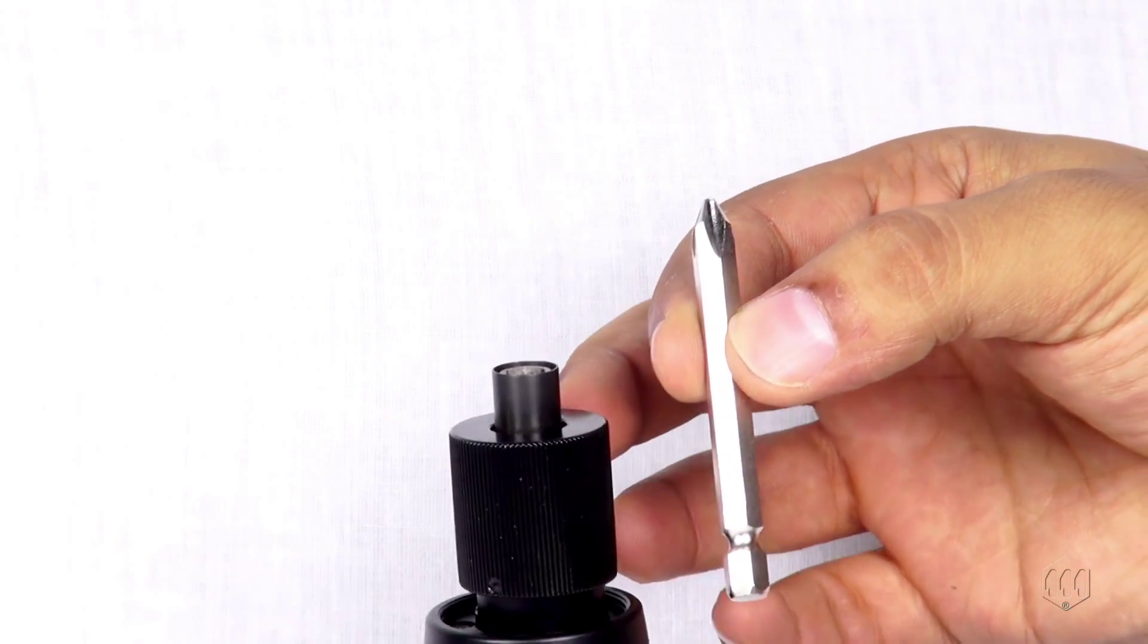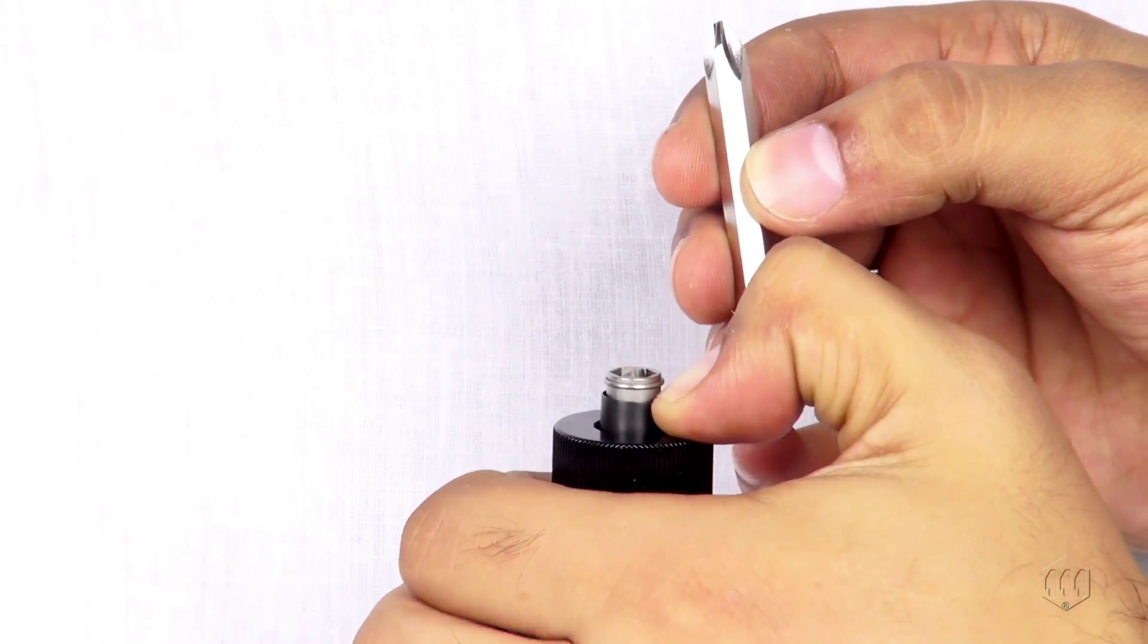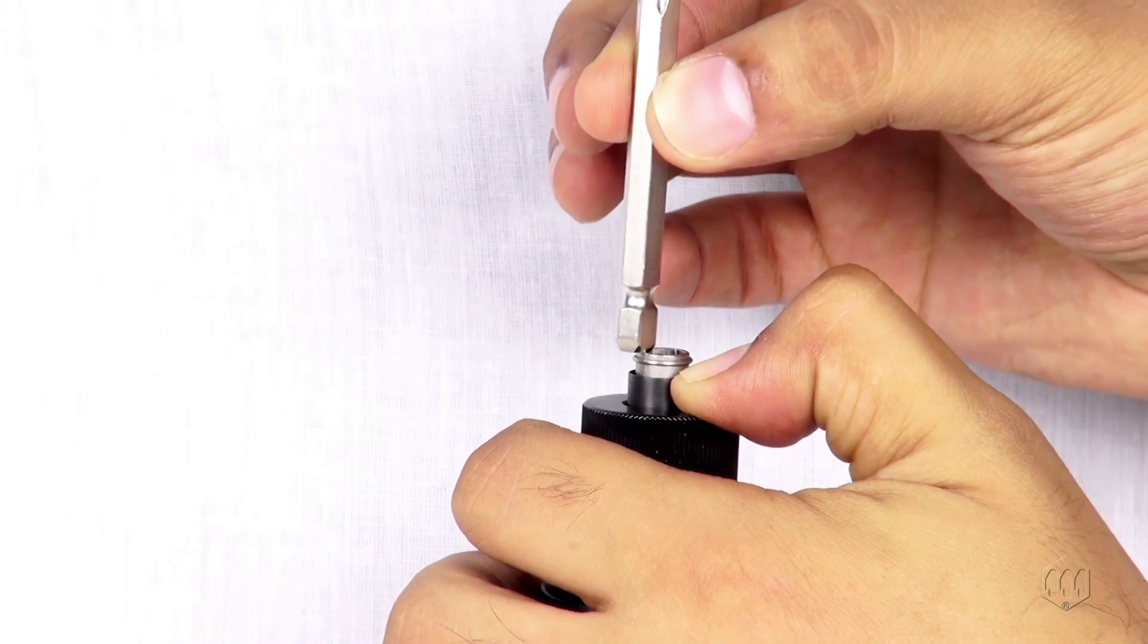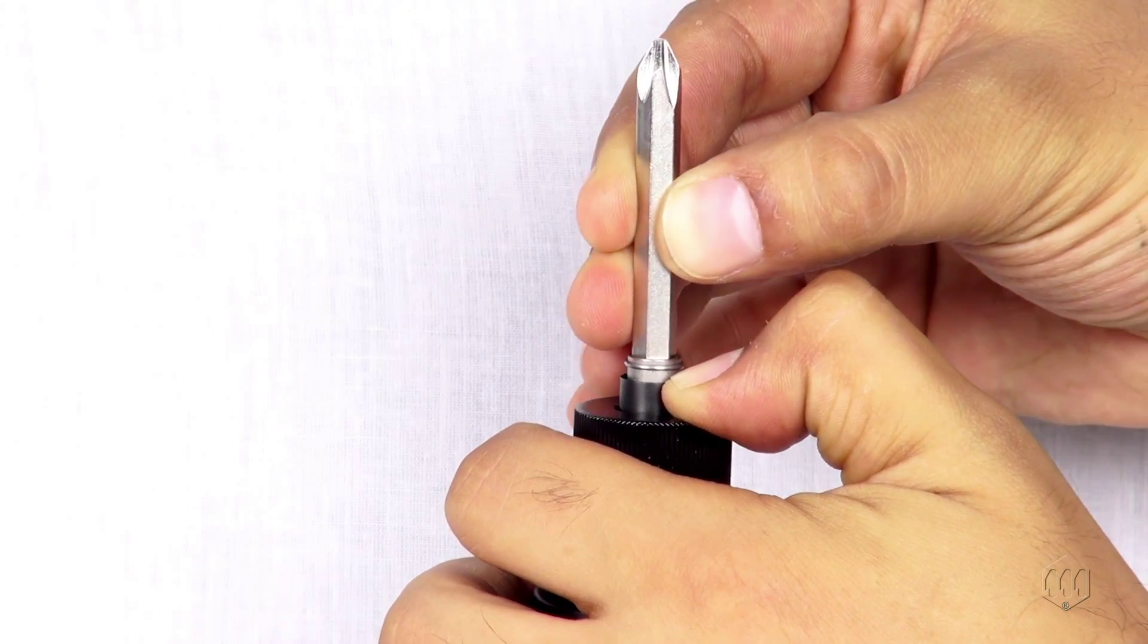Select the proper bit for your fastener. Retract the bit collar, insert the bit, and release.